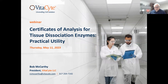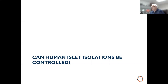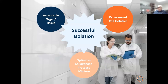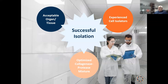This will be the topic of this seminar: can human islet isolations be controlled? Stepping back, there are three factors that affect islet isolations: an acceptable organ and tissue, experienced cell isolators who can make adjustments when dealing with difficult organs, and an optimized collagenase-protease enzyme mixture.